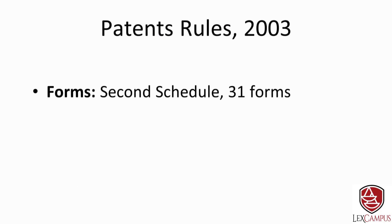The second schedule lists the various forms that an applicant needs to use while filing things before the patent office. For example, Form 1 is for filing a patent application, and Form 2 is for the complete specification or provisional specification. The second schedule has 31 forms, and it is important to know these forms to understand which form is used for which procedure.